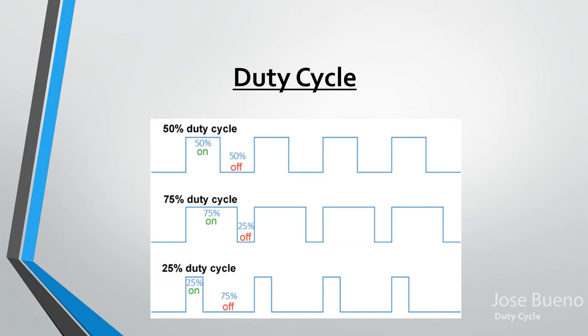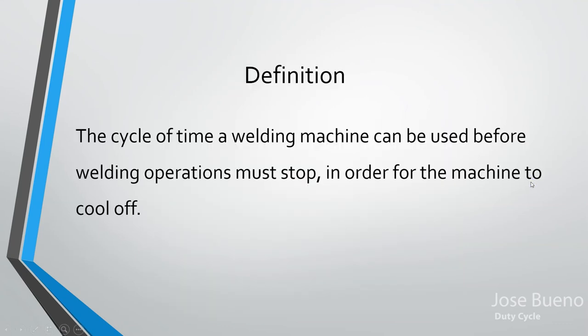Duty cycle is something we need to be aware of when we're using our welding machines. If you don't know what duty cycle is, the graph here probably won't make any sense, but don't worry. Basically, duty cycle tells us how long we can use a welding machine before we have to completely stop and let it cool off. While the machine is cooling off, you can chip welds, brush material, or clean your material — you just need to stop using the machine and allow it to cool off by itself.